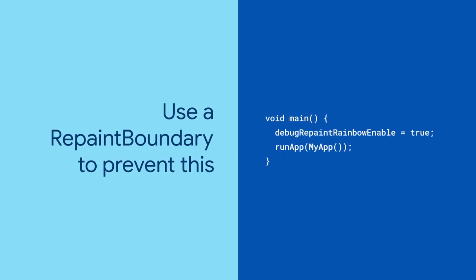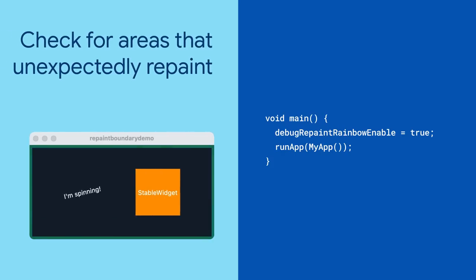It's called repaint boundary. To start, set debugRepaintRainbowEnabled to true in your main method, right above where you call runApp. This flag tells Flutter to draw a colorful border around each repaint area, and to change that color whenever the area is repainted.